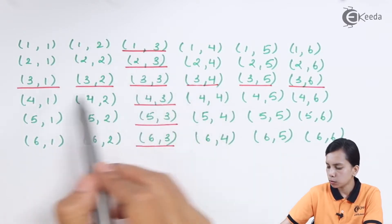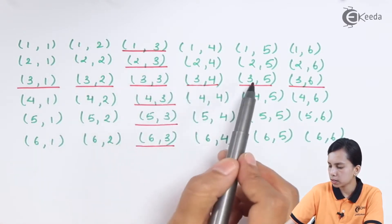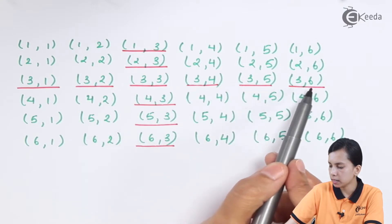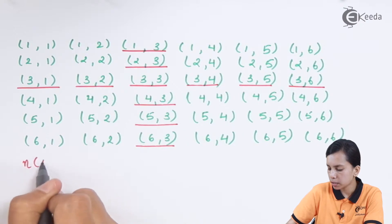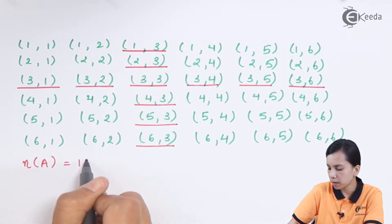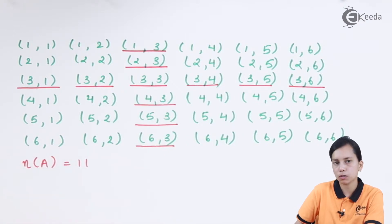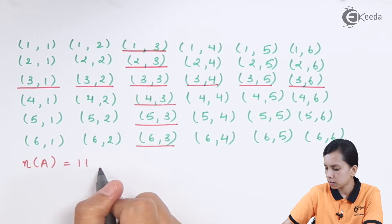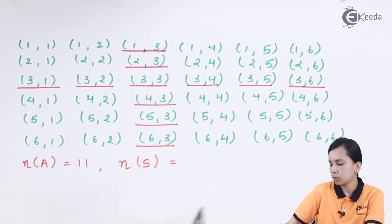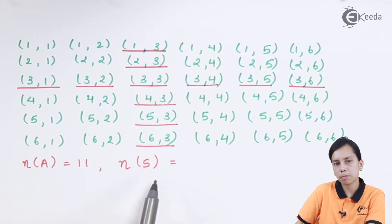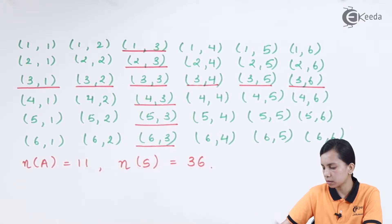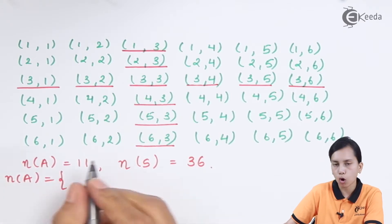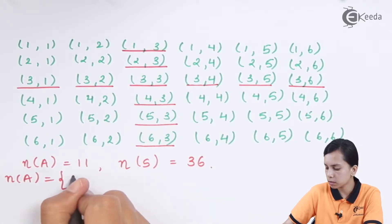The total number of combinations — one, two, three, four, five, six, seven, eight, nine, ten, eleven — total number of combinations n(A) is equals to 11. Total sample space is equals to 36.